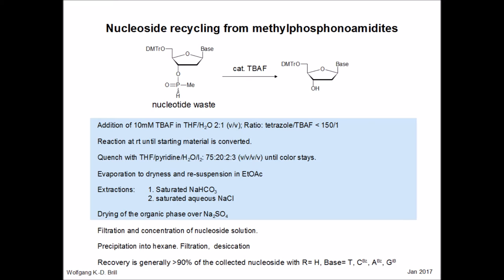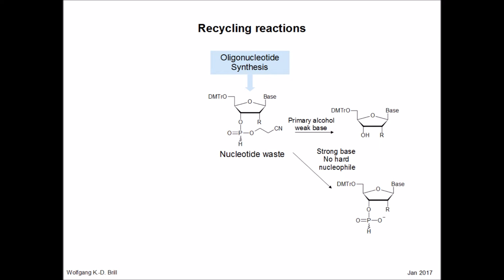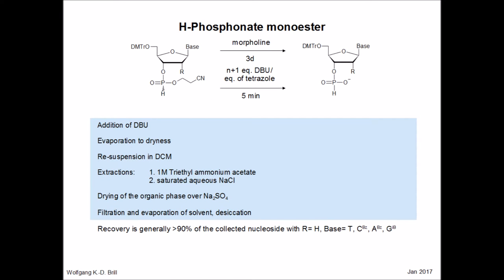When all the nucleosides are liberated, we have to quench the reaction with an oxidant to avoid back reaction during workup. Workup is then very simple, and most nucleosides can be obtained in high yields. Another recycling process is the conversion of the phosphoramidite hydrolysates into hydrogen phosphonate building blocks.